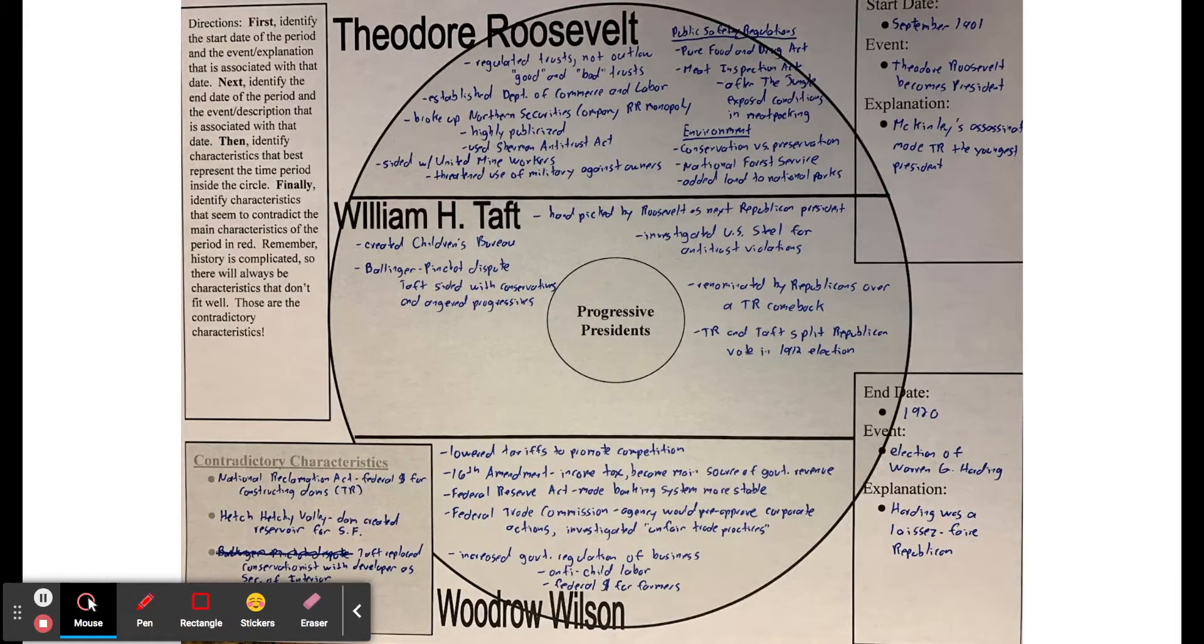Taft was maybe a little bit less of an obvious reformer. He didn't get the publicity that Roosevelt got with Northern Securities and that sort of thing, but he was actually a more prolific trust buster. I think he went after 73 different trusts whereas Roosevelt went after much less than that, but Taft never got the publicity for it. He did create the Children's Bureau, which is about the federal government looking after the welfare of children.